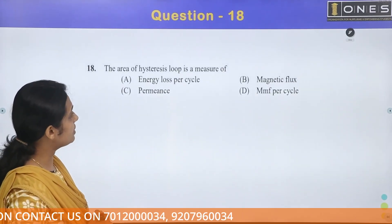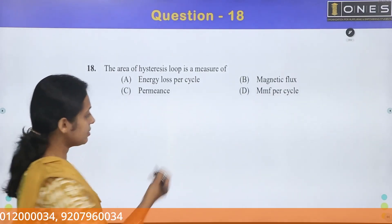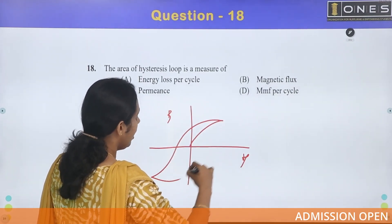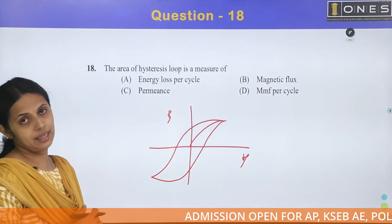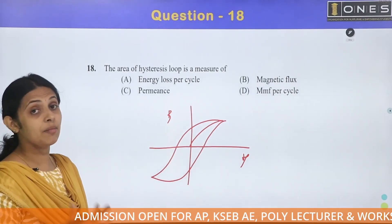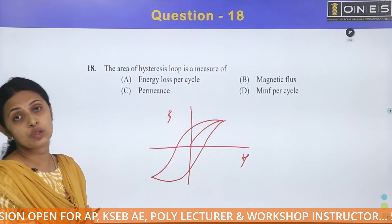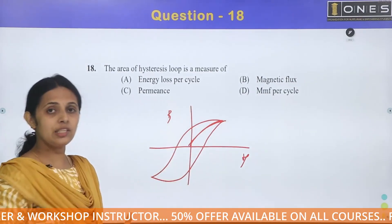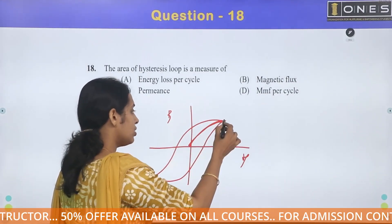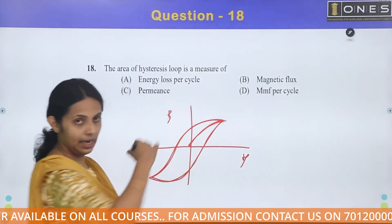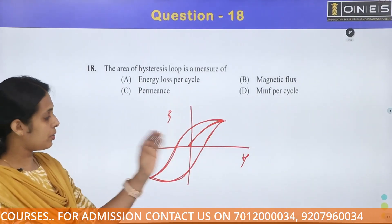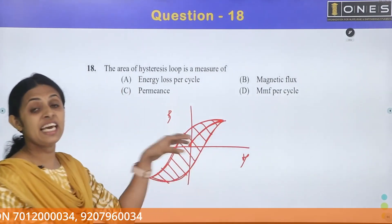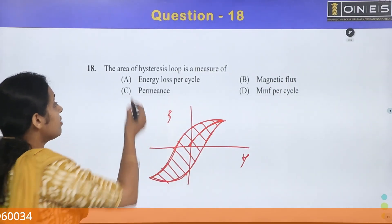Next: The area of a hysteresis loop is a measure of what? The hysteresis loop is a BH curve for a ferromagnetic material. The area enclosed by this loop represents energy loss per cycle under magnetization change.